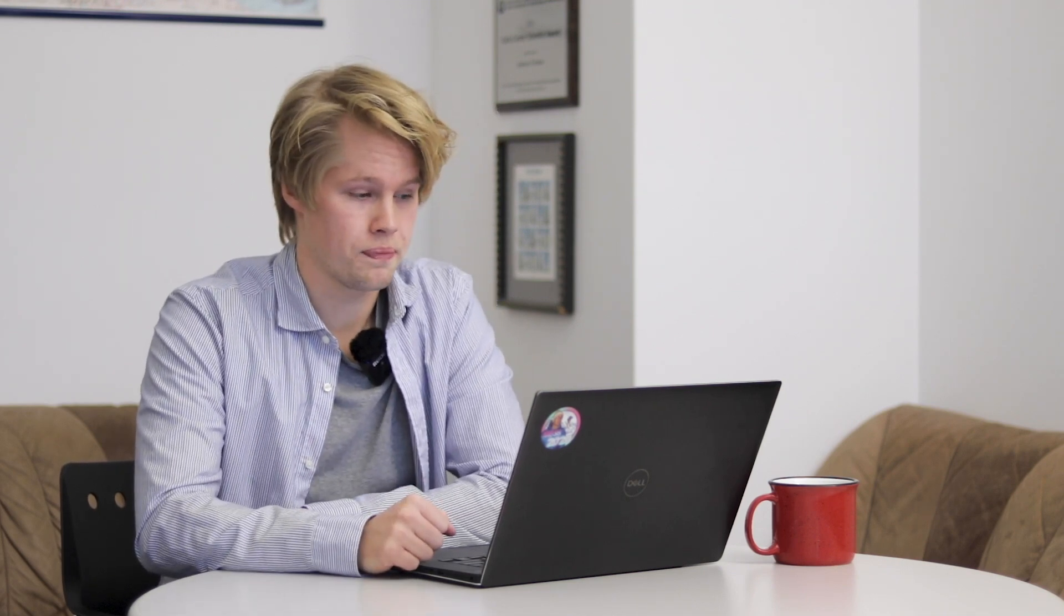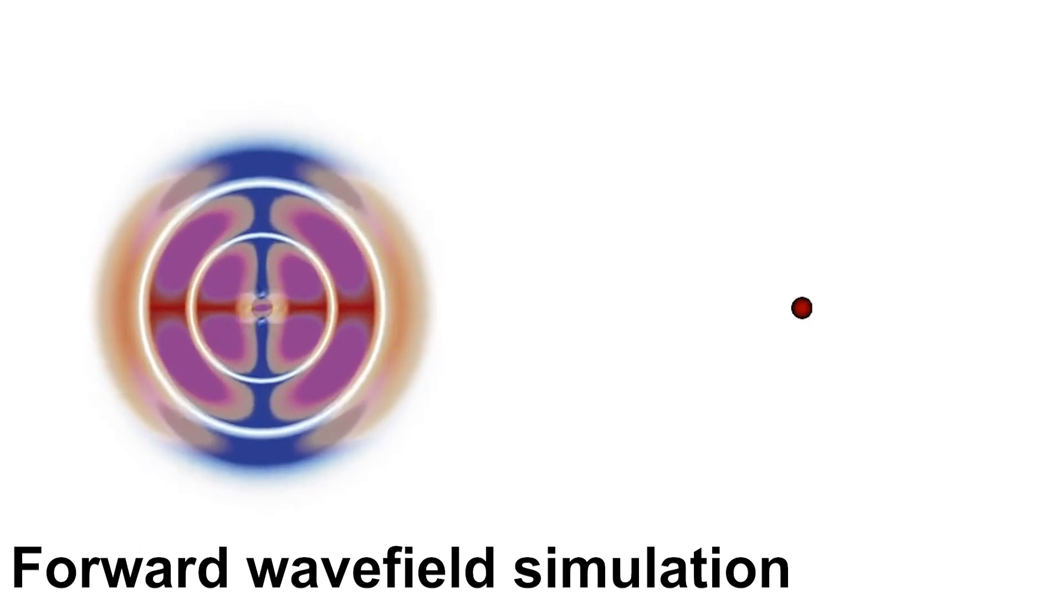Full waveform inversion is a relatively new technique seismologists use to look inside the earth. It simulates wave propagation on a powerful computer and then compares these simulations with the observations, our seismograms. Here you see an example of such a simulation.